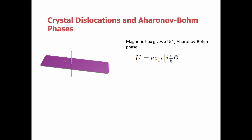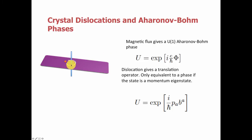A nice analogy between a dislocation and the Aharonov-Bohm effect for magnetic flux: imagine an isolated magnetic flux line with a charged electron dragged around it. The electron's wavefunction picks up an Aharonov-Bohm phase proportional to the charge times the magnetic flux divided by ℏ. For an isolated dislocation instead of a flux line, instead of picking up a U(1) phase, what we pick up is a translation operator. The amount of translation is the Burgers vector times the momentum operator — the generator of translations. So the phase picked up is a translation phase, proportional to the momentum of the state and the Burgers vector of the dislocation.